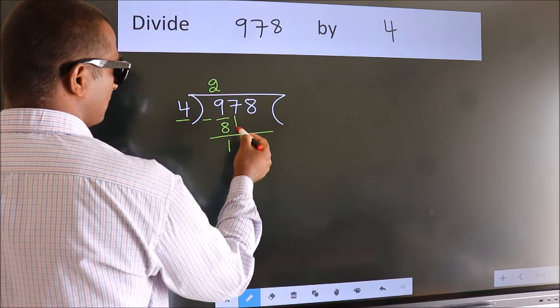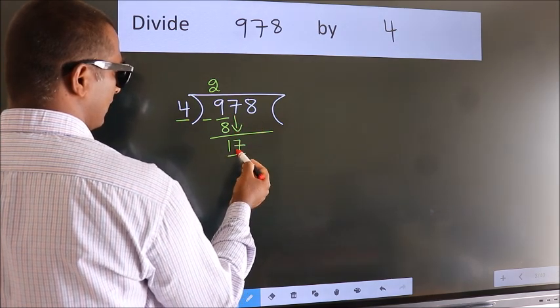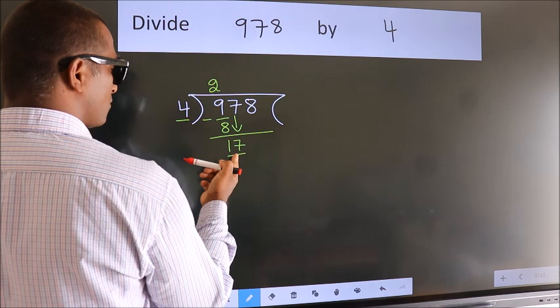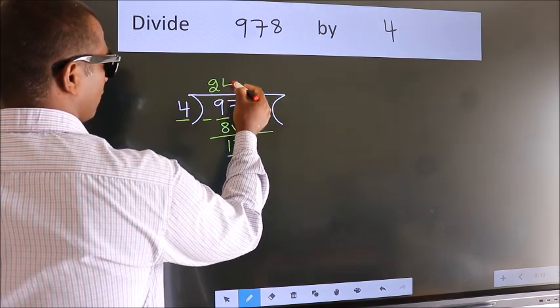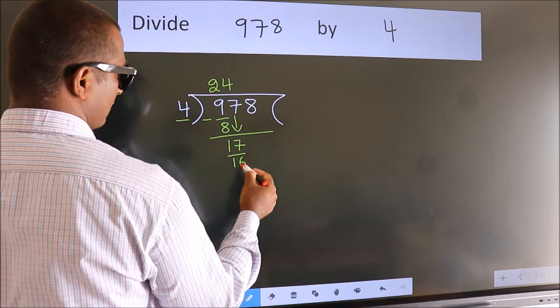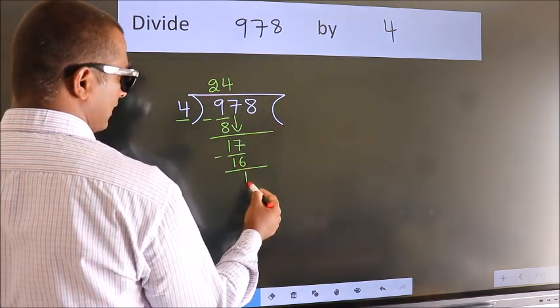After this, bring down the beside number. So, 7 down, making 17. A number close to 17 in the 4 table is 4 fours, which is 16. Now we subtract. We get 1.